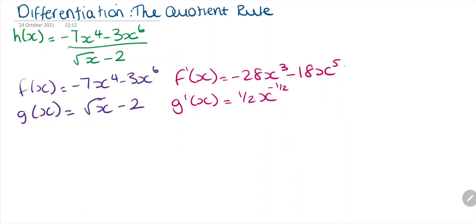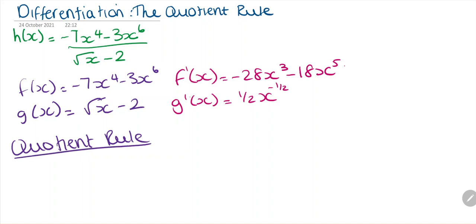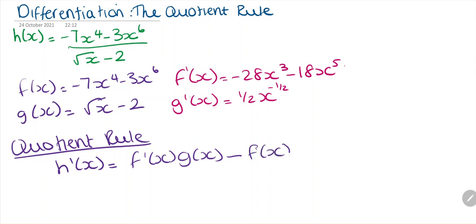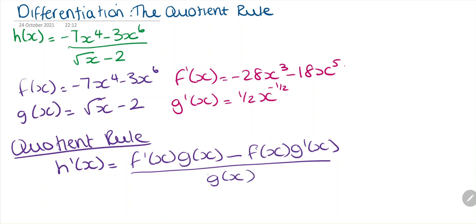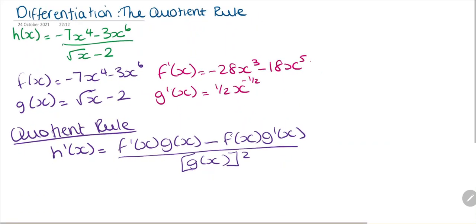Now the quotient rule. To find the derivative of h, we take the derivative of f multiplied by the function g, then minus the original function f multiplied by the derivative of g, and this is all divided by g(x) squared. Now we need to substitute in our values and functions.